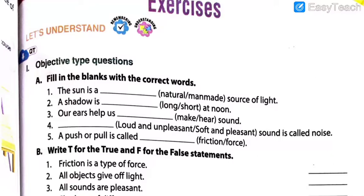I will give the answers for all five together. Question two: A shadow is dash at noon — long or short? The picture was given related to the shadow. It was very easy — try to find out the answer.